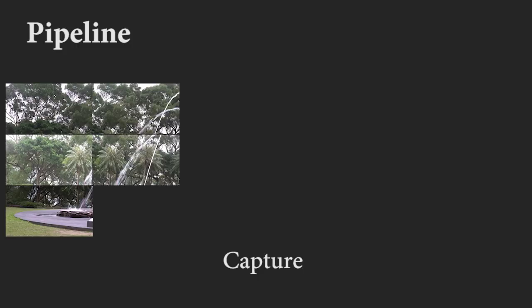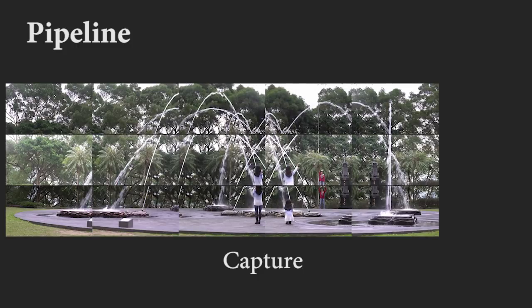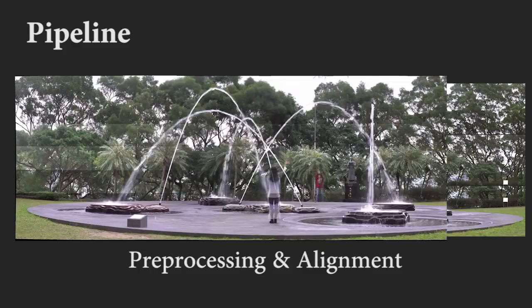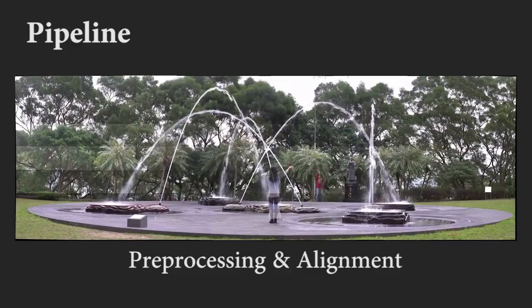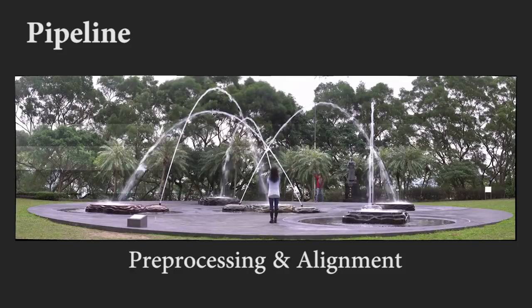We first capture input video tiles with the aid of a camera mounted on a robotic arm. These tiles are first pre-processed for stabilization and temporal gain compensation. We then stitch them together to estimate camera parameters for each video tile.